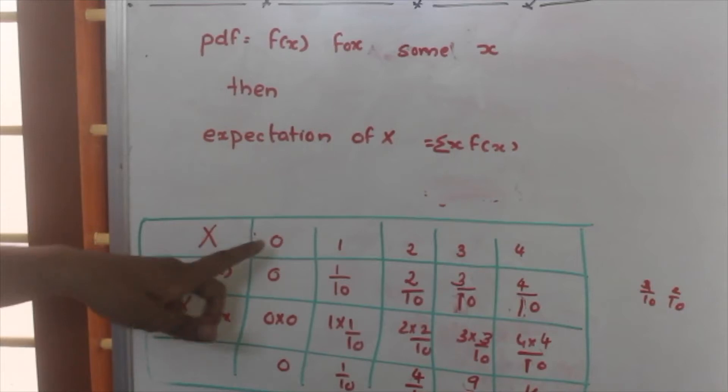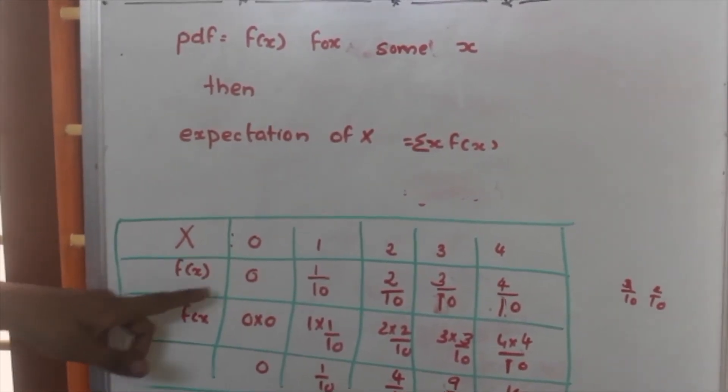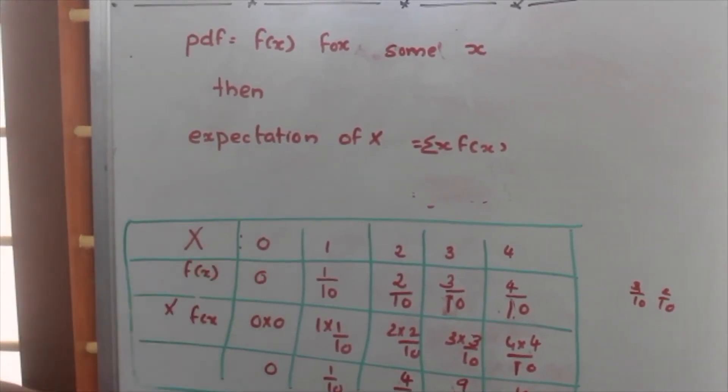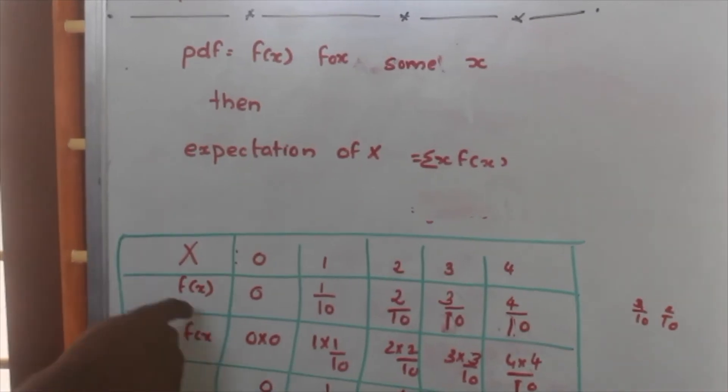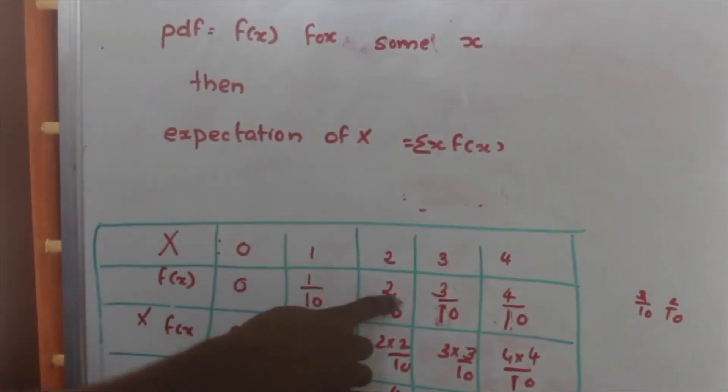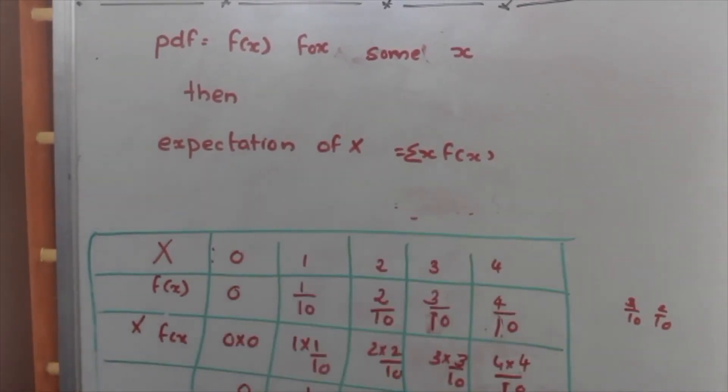Now, when we supply x, we will get f of x as given in table. Here, directly f of x is given. So, f of x is equal to 0, 1 by 10, 2 by 10, 3 by 10, 4 by 10.